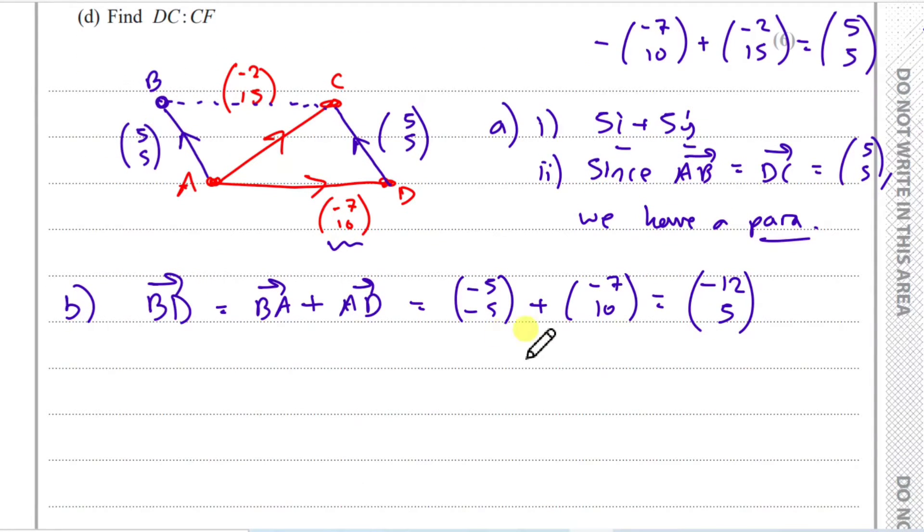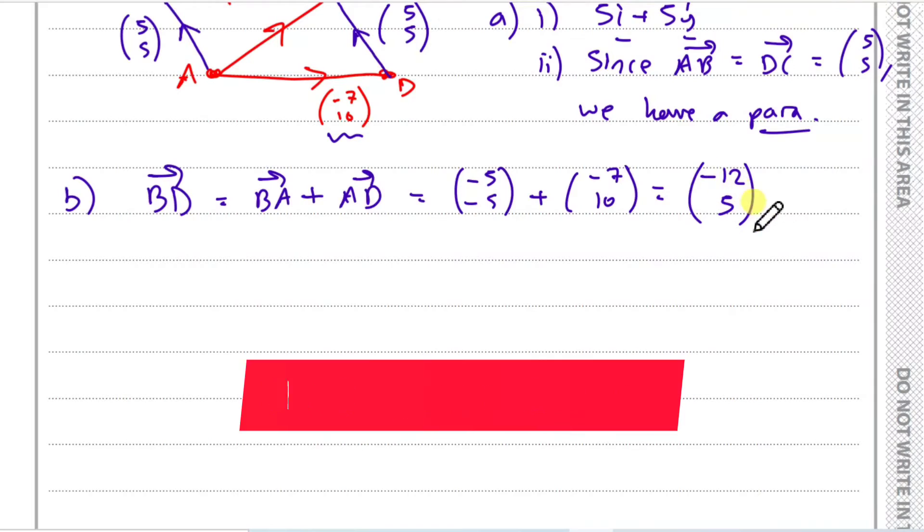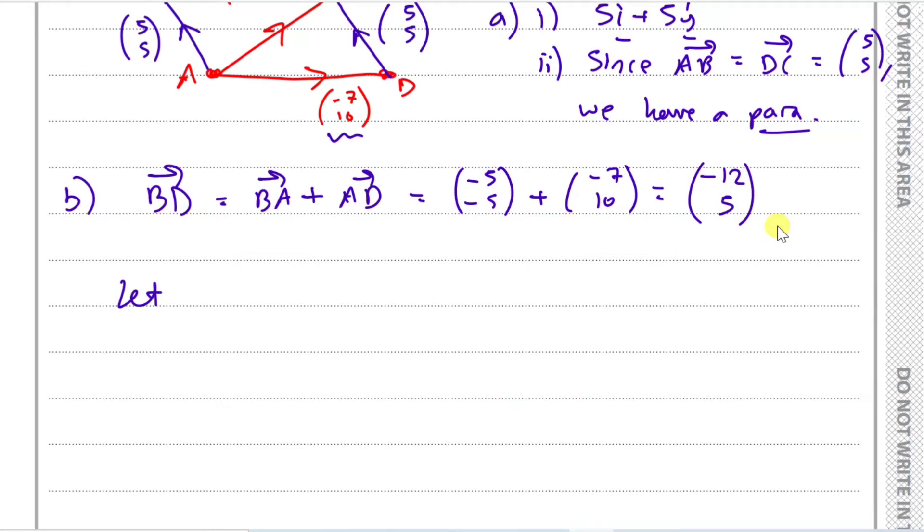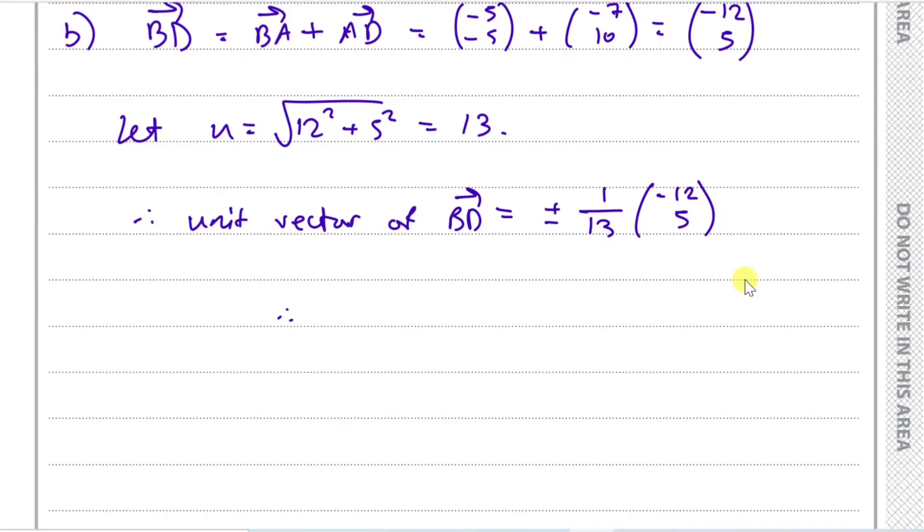And then adding this up, you should get a minus 12 on the top and 5 at the bottom. So now we have a vector. To get a unit vector is so easy. All you do is literally use Pythagoras on this one. So you square both of them and square root it. So we say, let's call this one U. U equals 12 squared plus 5 squared square root. Put this in a calculator. You should get 13. And now, the unit vector of BD is going to be plus minus 1 over 13 of your vector, minus 12 and 5. Or if you want to keep an ij form, you can say equals plus minus 1 over 13 of minus 12i plus 5j. Either way, both answers are valid.